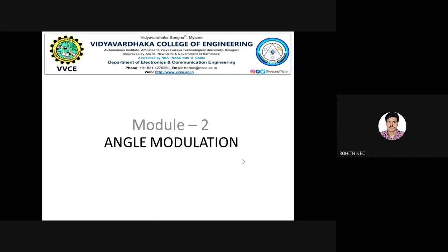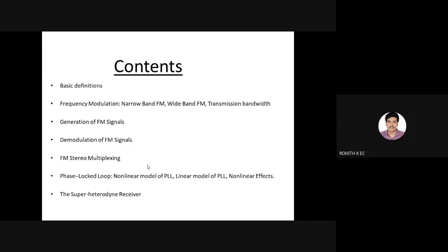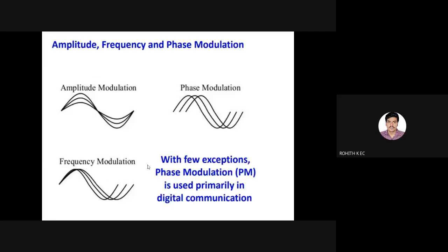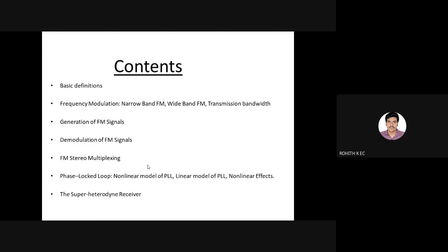Good morning everyone. In the previous class we discussed briefly about the expressions related to the two important modulation schemes under angle modulation — frequency modulation and phase modulation. We had derived the expression for the FM and PM wave for a sinusoidal message signal. Today we shall derive the expression for the FM wave for a given message signal. The module contents include definitions, FM generation, FM demodulation, multiplexing, PLL, and superheterodyne receiver.